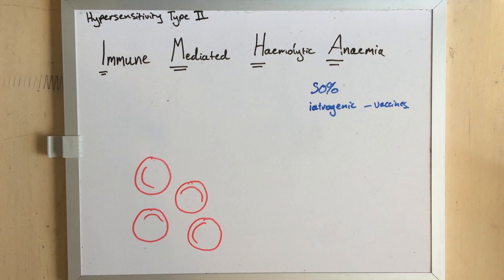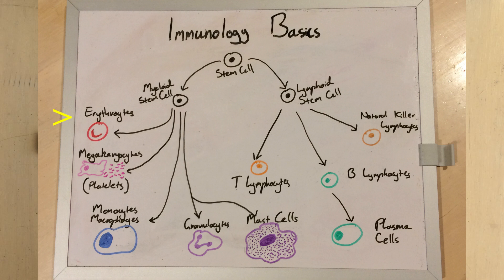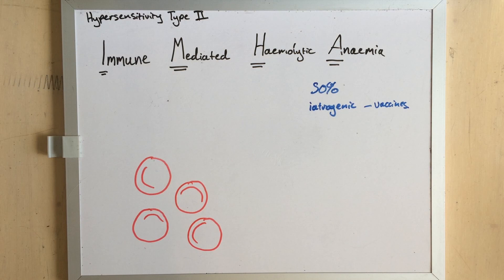But before we go too far, have you watched the previous immunology videos? Because I'm going to talk in particular about erythrocytes, the red blood cells, megakaryocytes and their platelets, and of course B cells and their antibody production. But almost every cell type in the immune system gets a look in with IMHA.